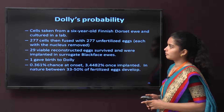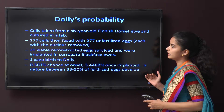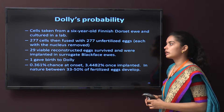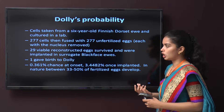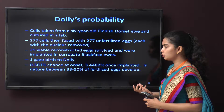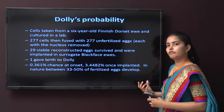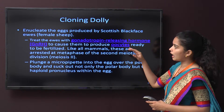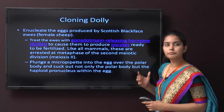Cells were taken from the six-year-old Finn Dorset ewe and cultured in the lab. 277 cells were fused with 277 enucleated unfertilized cells. 29 viable reconstructed eggs survived and were implanted in surrogate Scottish Blackface ewes. Only one gave birth to Dolly — a 0.36% chance of onset and a 3.45% success rate once implanted. Between 33 to 50% of fertilized eggs developed. The Scottish Blackface ewes were treated with GnRH — gonadotropin-releasing hormone — to cause them to produce oocytes ready to be fertilized.